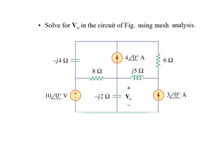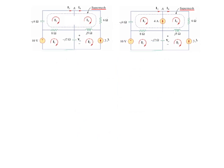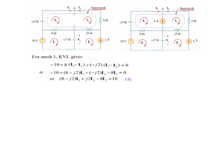The next example has four meshes. Carefully examining, there is a current source between two meshes — this is called a super mesh. The technique for super mesh is to remove the current source, write the equation, then replace it and write another equation. After removing the current source between the two meshes, we write equations for the three remaining meshes.